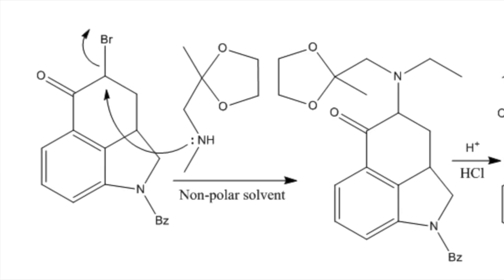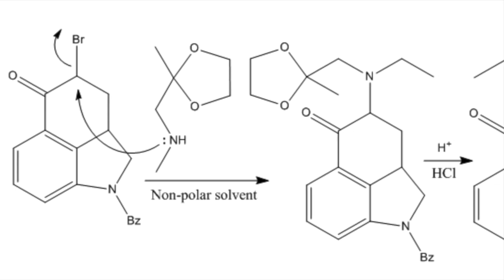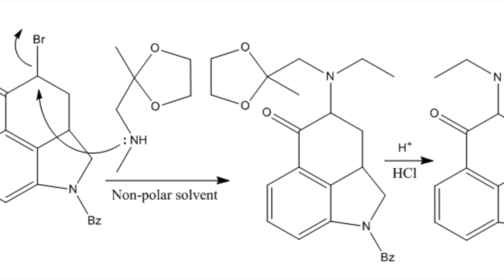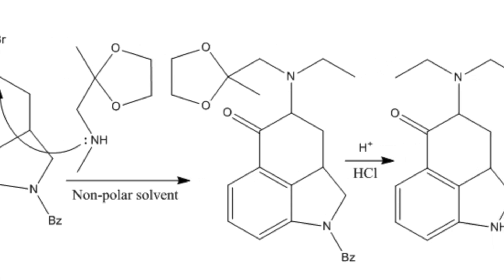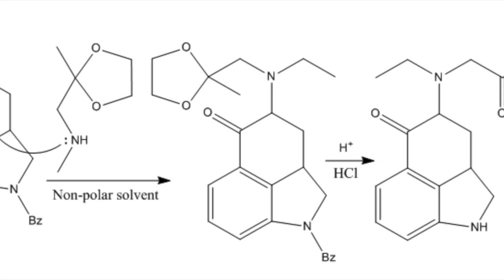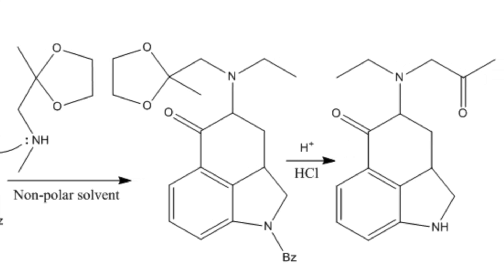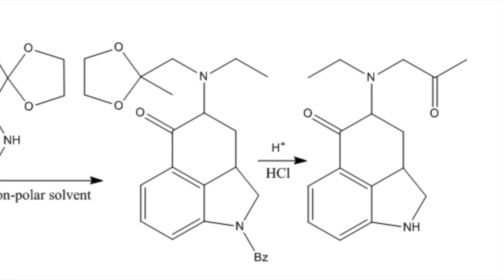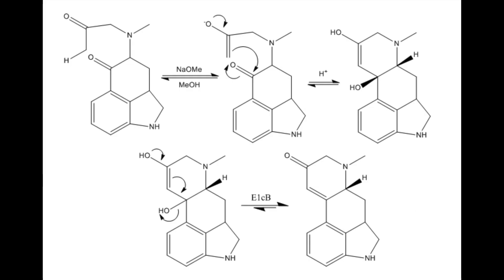The brominated intermediate is then treated with methyl aminoacetate ethylene in a non-polar solvent, which is then hydrolyzed using HCl in order to deprotonate the acetyl to remove the ketone. The next step is to form the heterocyclic ring, which is done by treating the compound with methoxide and methanol. This closes the last ring of the molecule.